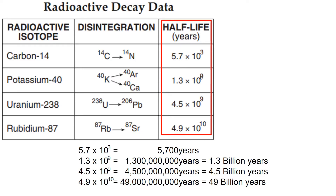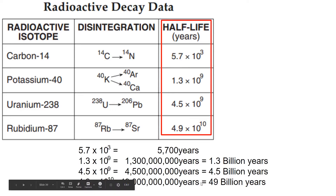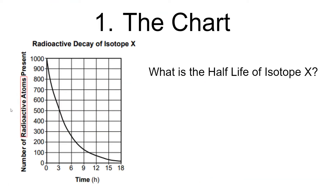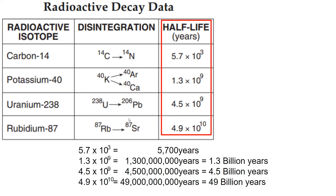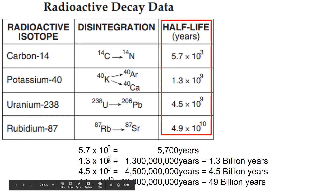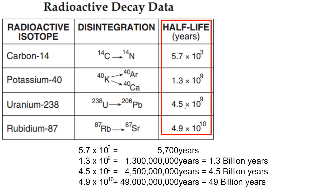I took the liberty of doing the math here, taking the scientific notation and putting it into just regular numbers of years. So here is 5.7 times 10 to the third — that's only 5,700 years. But 1.3 times 10 to the ninth is 1.3 billion years. The scientific notation — 10 to the third and 10 to the ninth — tells you how many places the decimal point has moved to the right.